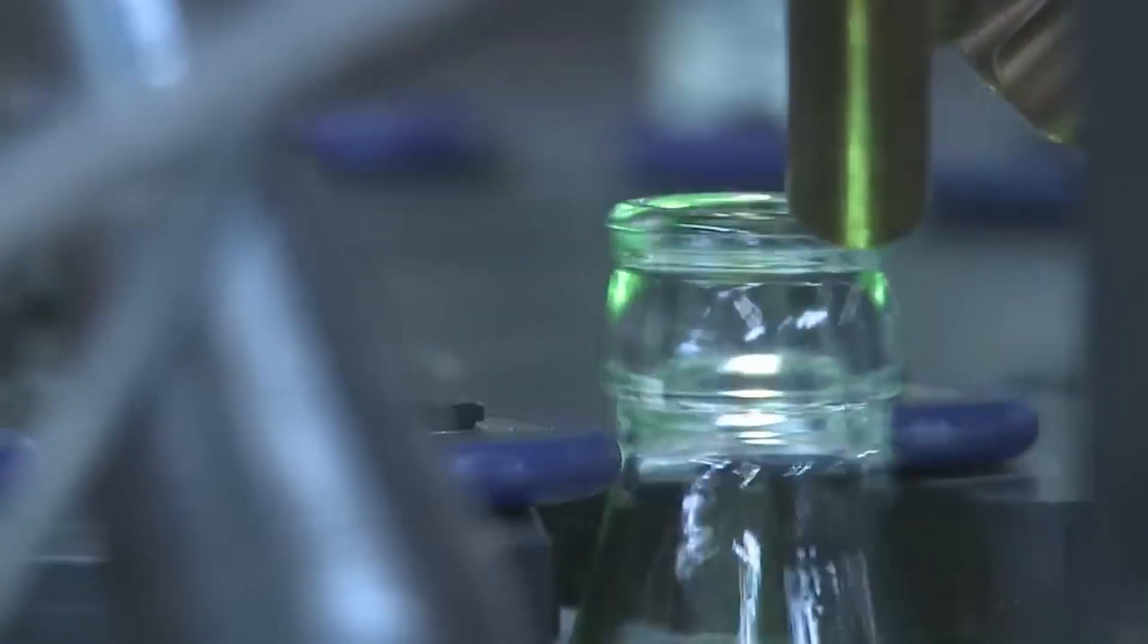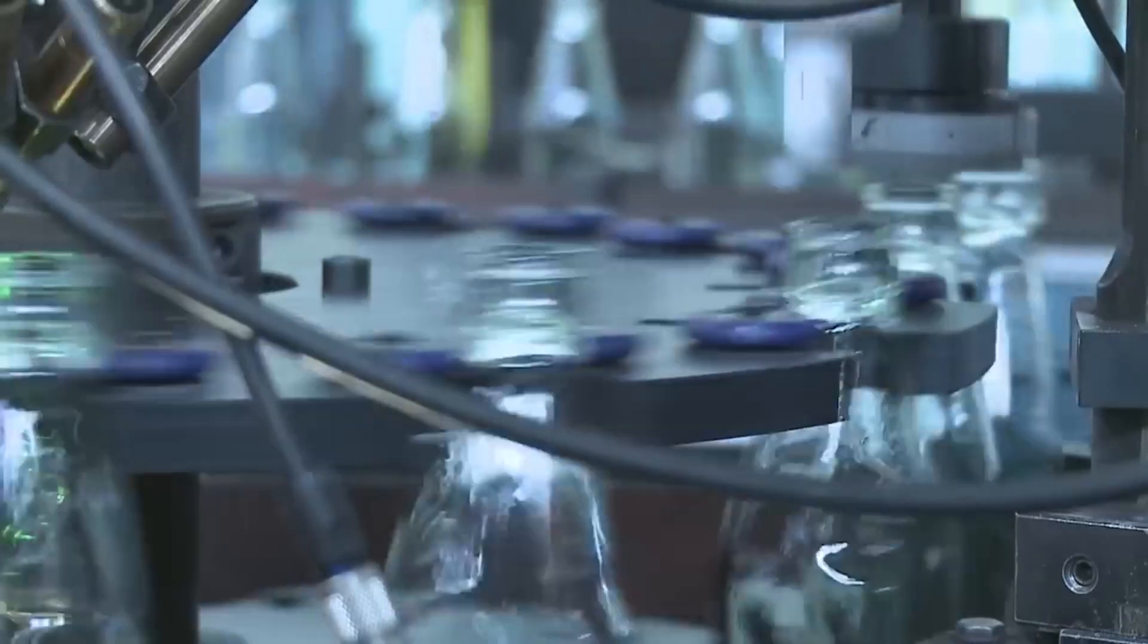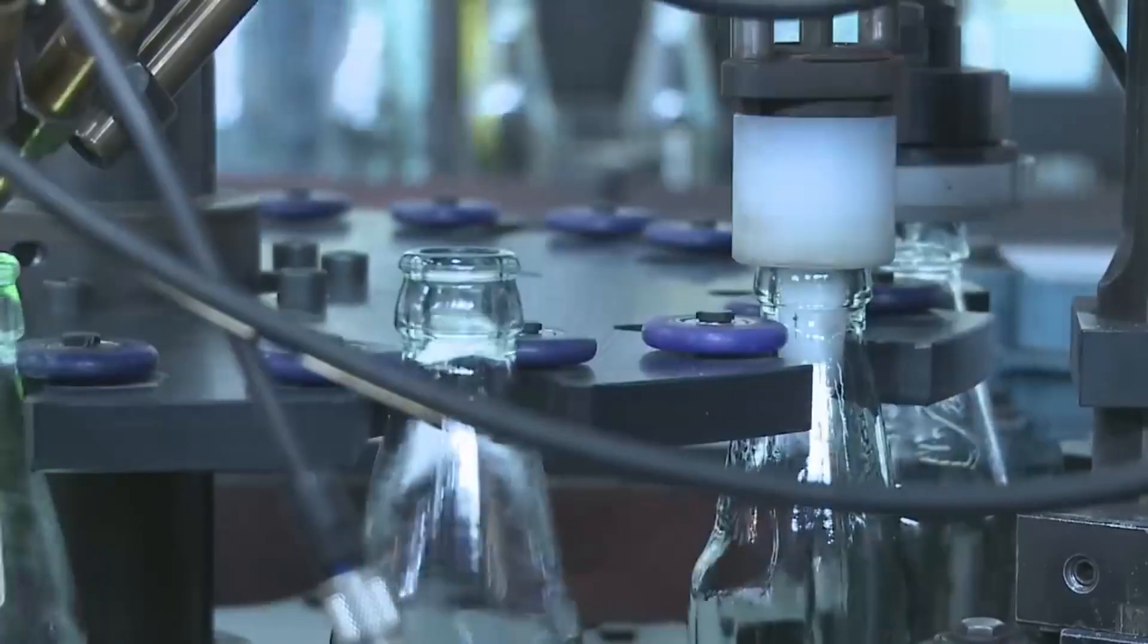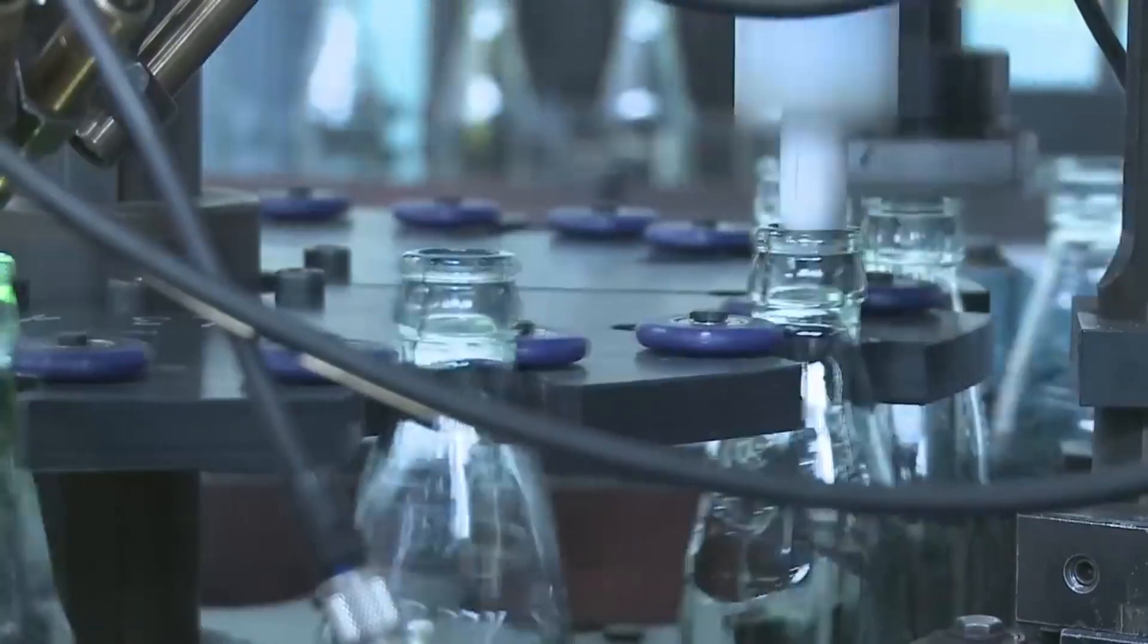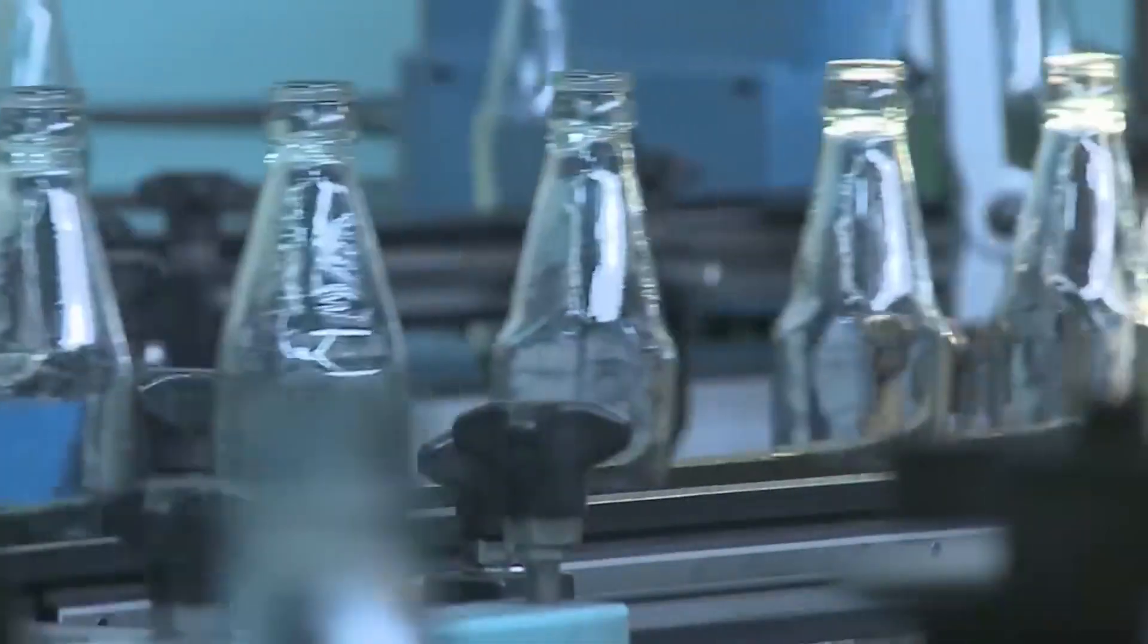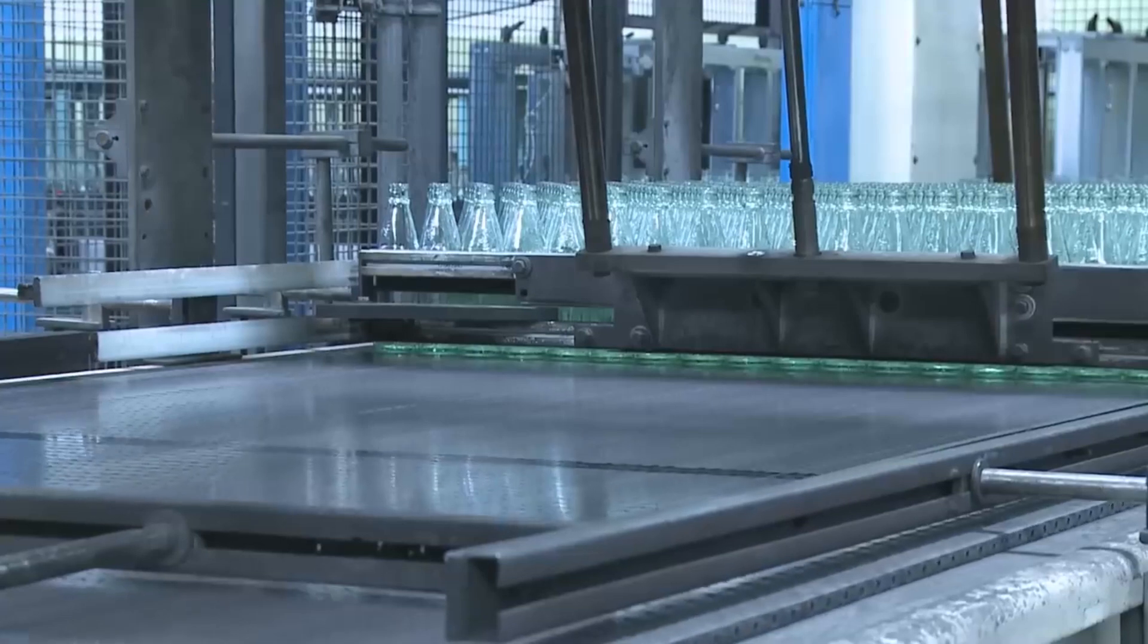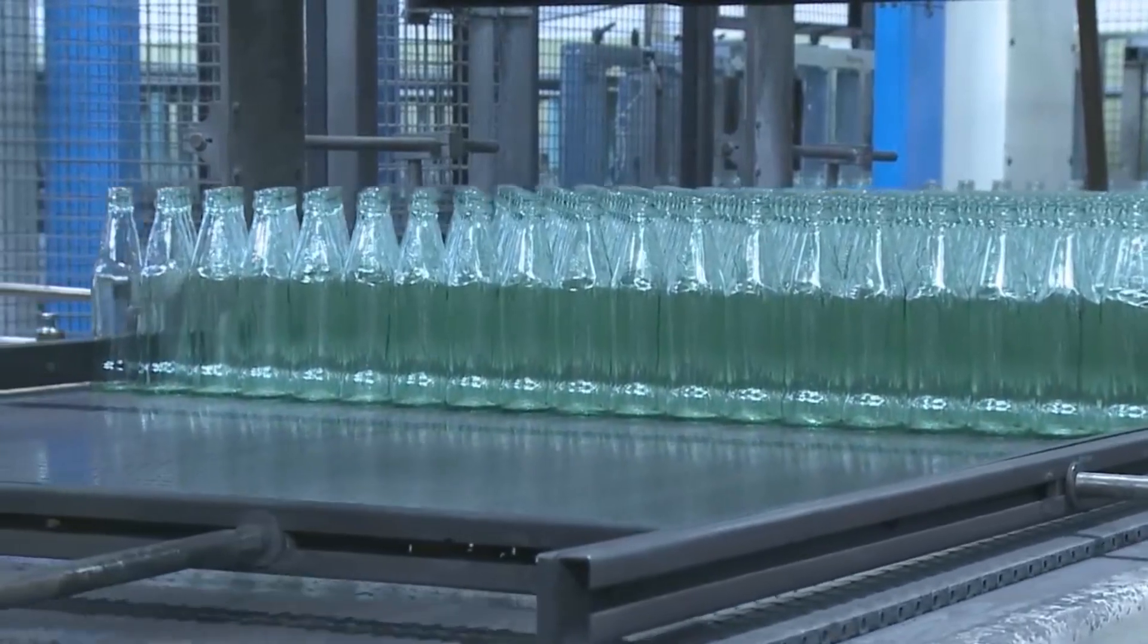Annealing involves subjecting the bottles to a specific temperature and holding them there for a calculated period of time. During annealing, any residual stresses within the glass are released, making the bottles less prone to breakage or cracking. This meticulous heat treatment ensures that the bottles can withstand the demands of everyday use. The cooling and annealing stages require both patience and precision. The duration of the cooling and the specific annealing temperatures vary depending on factors such as the bottle size and thickness. Every second counts in achieving the desired strength and quality.